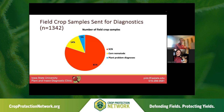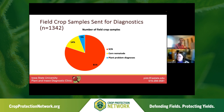In terms of field crop samples, we received about 1,342 samples — over a thousand. Most of those are soybean cyst nematode egg counts, but also a large number of corn nematode counts, which is the complete nematode count discussed earlier. We do also perform plant problem diagnosis for field crops, though it's a smaller proportion. With that, I'll turn it over to Chelsea to discuss the rest.